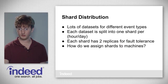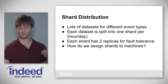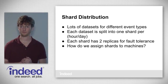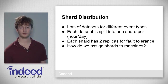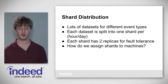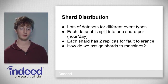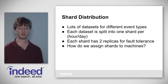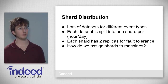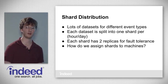Our next topic is shard distribution. We have lots of data sets for different event types — for example, job search and resume search — each split into one shard per hour or day. Each shard has two replicas for fault tolerance, so we can lose one machine and lose no data. The problem is: how do we assign these shards to the machines available?